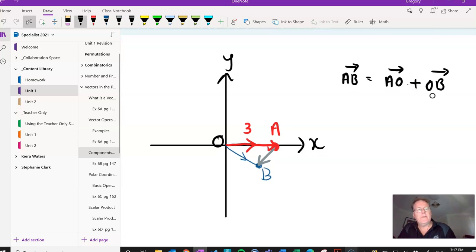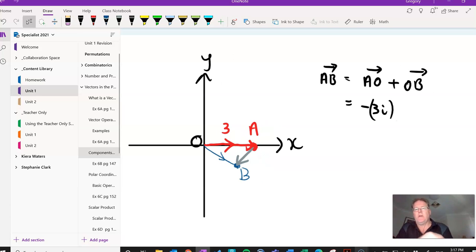So AO is just negative 3I, because it's in the opposite direction. If there was a J component, it would be opposite in both, but we've only got the I component, so I'll put it like this just to indicate that I'm going in the opposite direction.